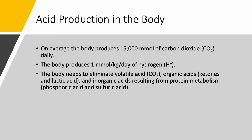What about acid production in the body? On average, the body makes a lot of carbon dioxide — 15,000 millimoles per day. On the other hand, it produces about 1 millimole per kilogram per day of hydrogen. The body needs to get rid of all this acid: it eliminates volatile acid CO2 via the lungs, and also eliminates organic acids like ketones and lactic acid, as well as inorganic acids resulting from protein metabolism, like phosphoric acid and sulfuric acid.